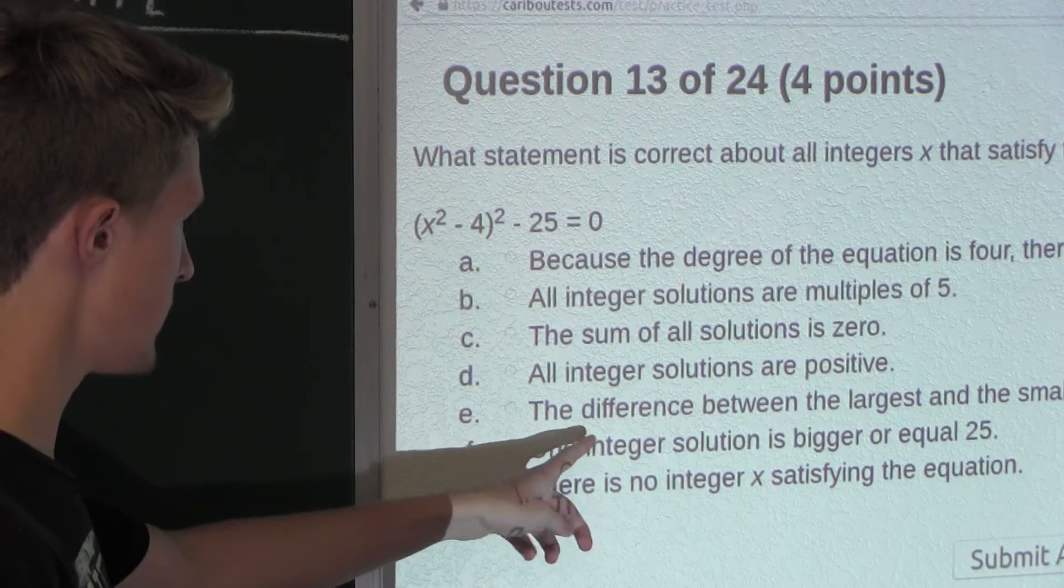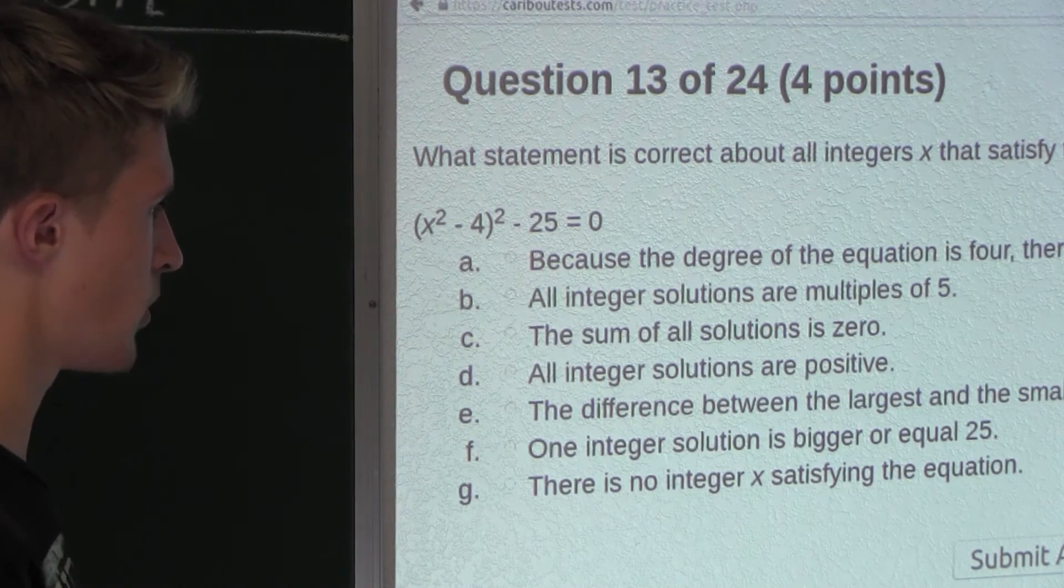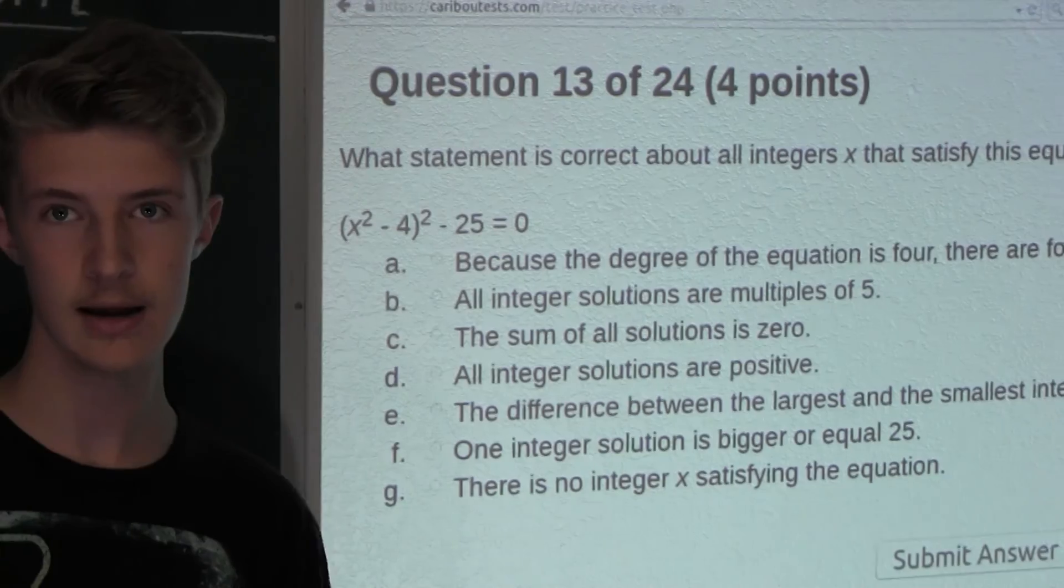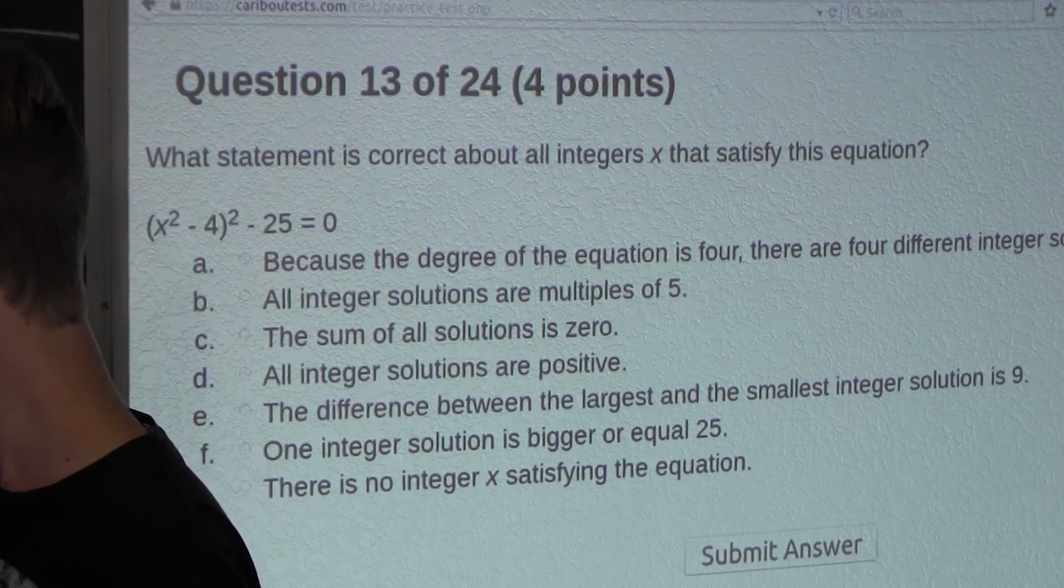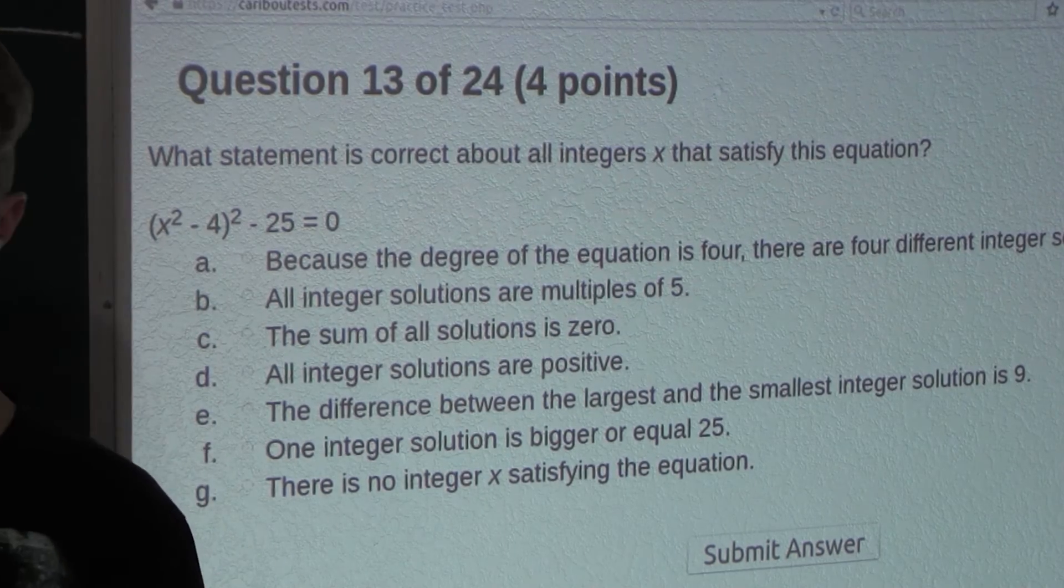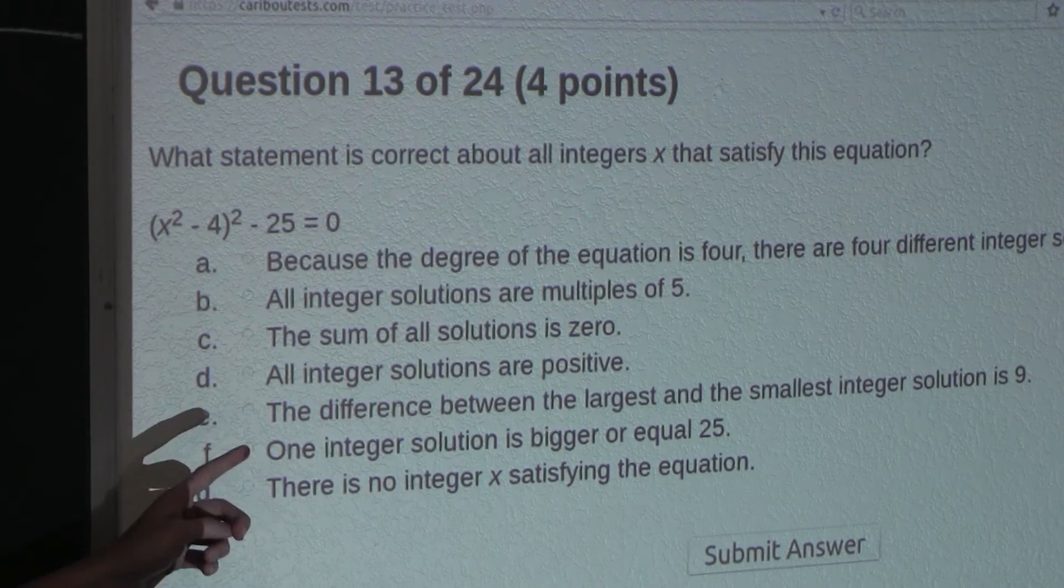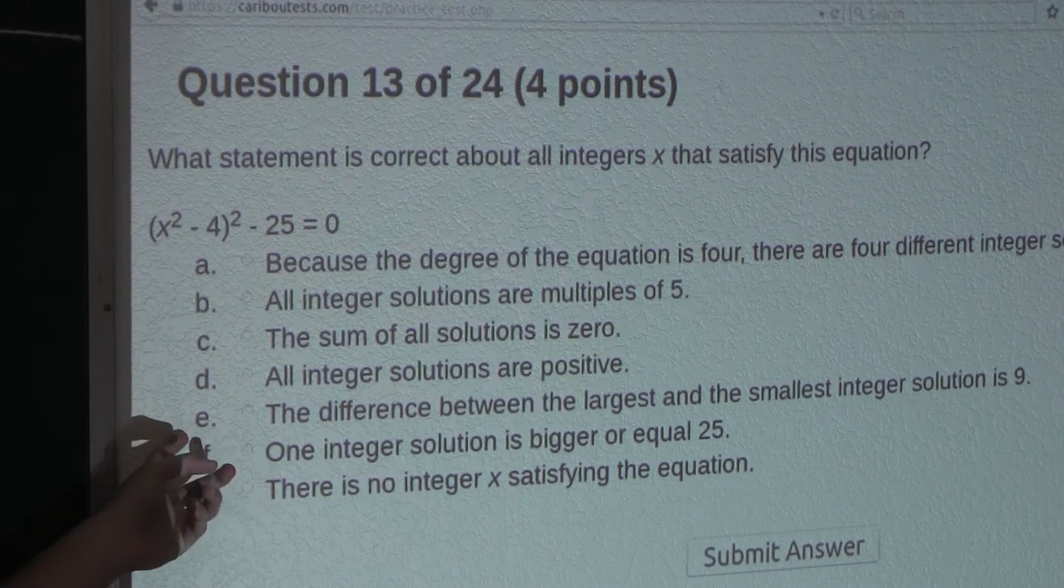Alright, so option E: The difference between the largest and the smallest integer solution is 9. Well, the difference between negative 3 and 3 is 6. So it's not 9. Therefore, option E is also false.